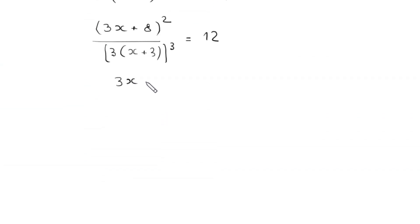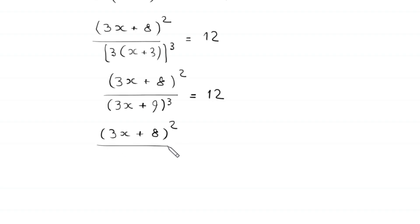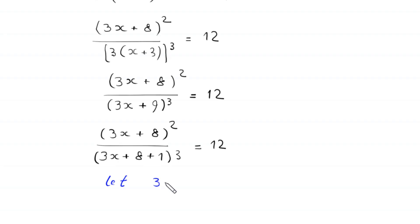Next, we distribute the 3 in the denominator: 3 times x becomes 3x and 3 times 3 becomes 9, giving us 3(x + 8)² divided by (3x + 9)³ equals 12. Now 3x + 9 can be written as 3 times (x + 8 + 1), so the denominator becomes 3(x + 8 + 1)³ equals 12.